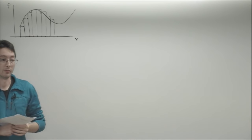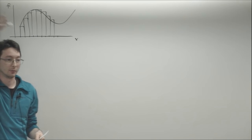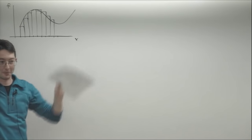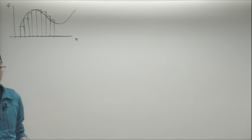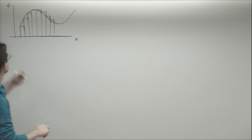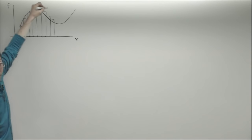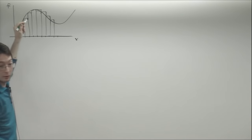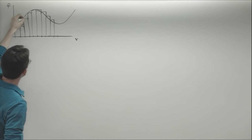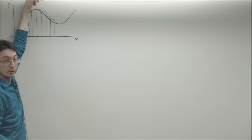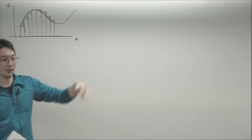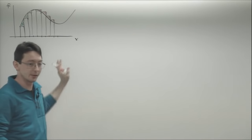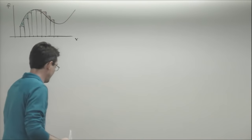How accurate do you think this method is going to be? How could this rectangle rule be inaccurate? It can overshoot or undershoot. Every time my function has a positive slope, I'm undershooting — there's real area that my rectangles are missing. And for any time where my function has a negative slope, I'm overshooting. These are real errors. This is actually a very problematic method for integration.